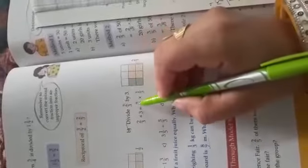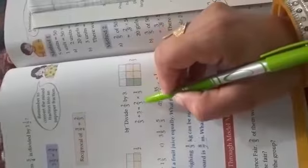Now multiply: 2 times 1 equals 2, 3 times 3 equals 9. The answer is 2/9. Do both problems in your fair notebook.